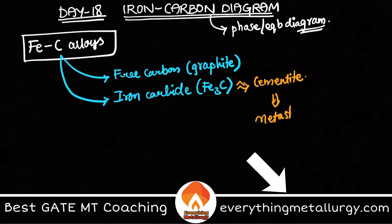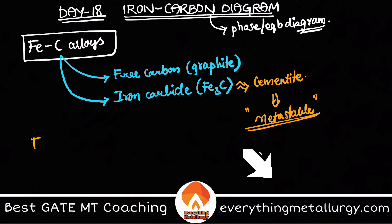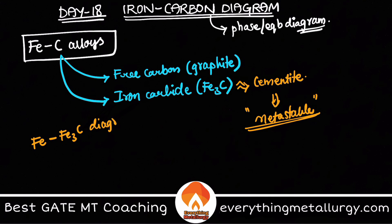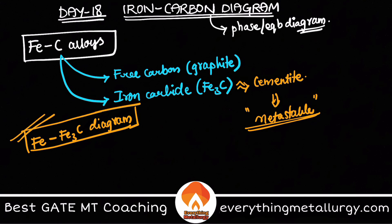Fe₃C is most famously known as cementite. Usually, cementite is metastable in nature. Usually when we talk about the iron-carbon equilibrium diagram, we plot the iron–iron carbide diagram. Of course there is an iron-graphite diagram also, but the iron–iron carbide diagram is more famous because this metastable phase is found in many alloys.